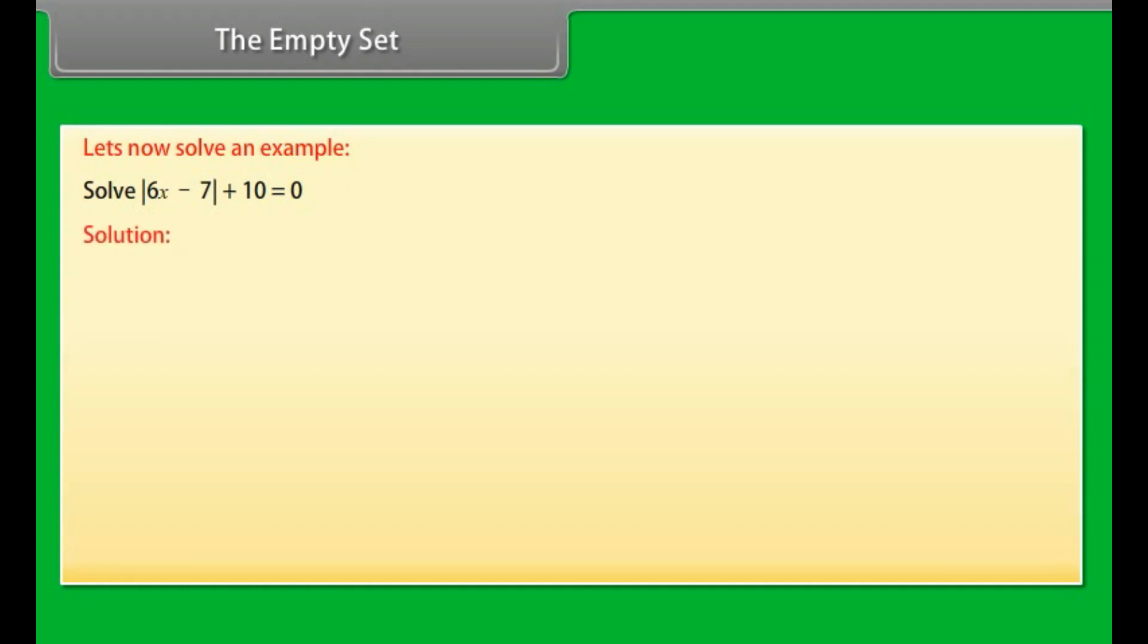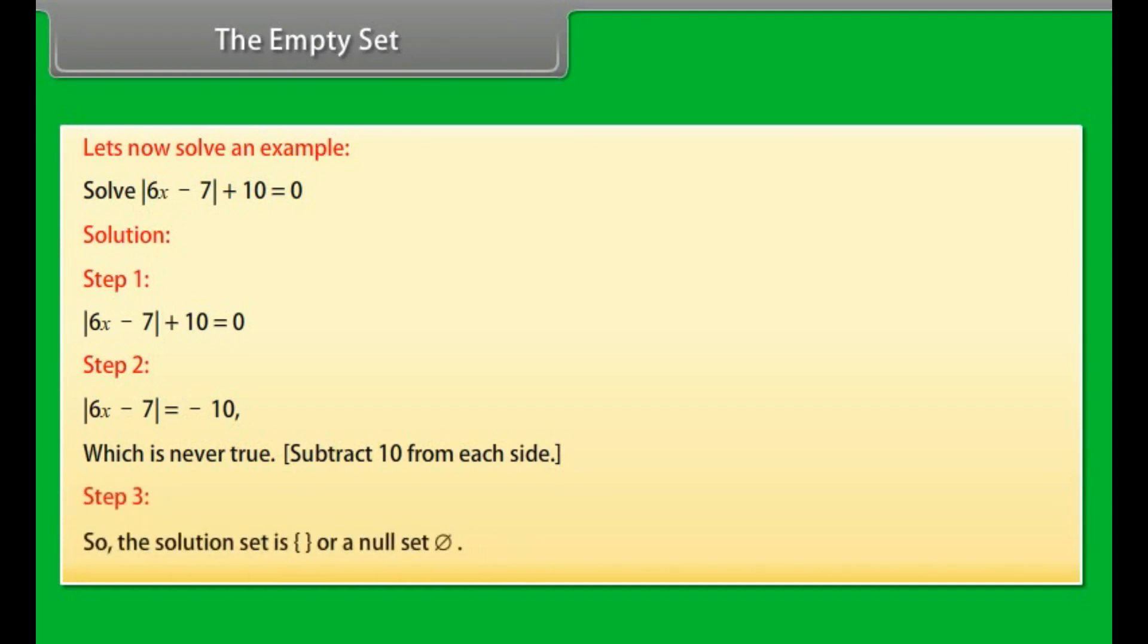Solution. Step 1: |6x - 7| + 10 = 0. Step 2: |6x - 7| = -10, which is never true (subtract 10 from each side). Step 3: So, the solution set is empty set or a null set.